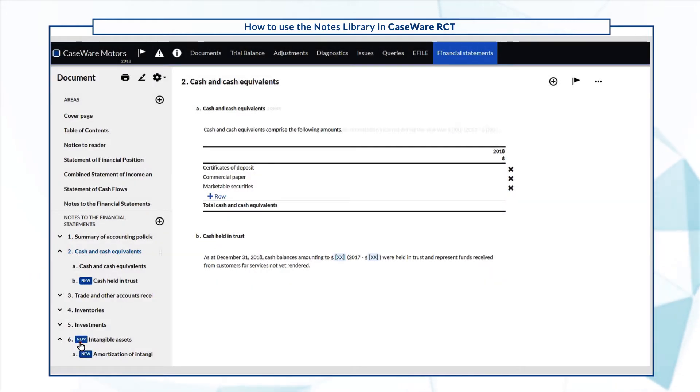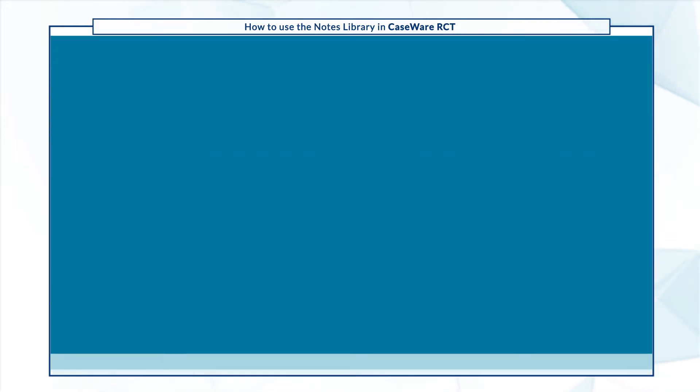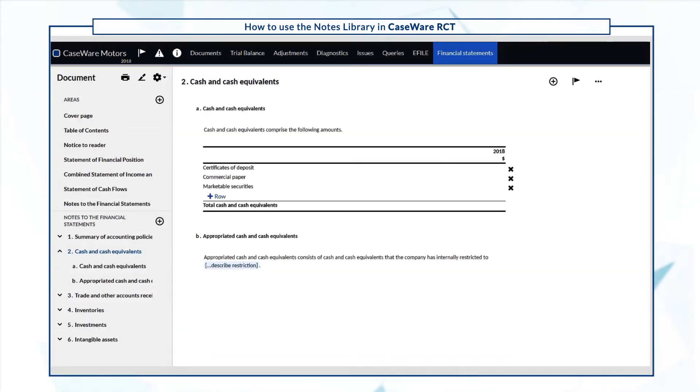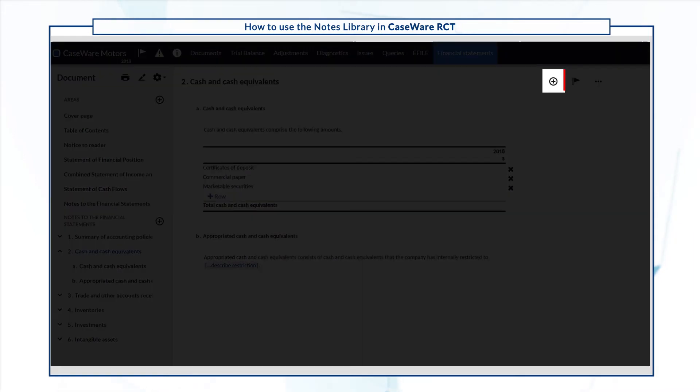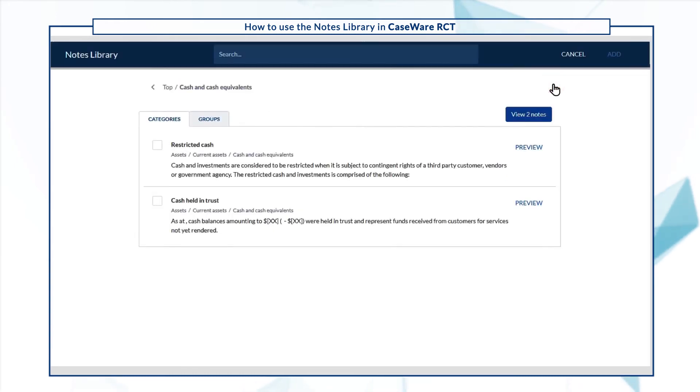After you select a newly added note to review or edit, the marker indicating a new note disappears. You can also use the library to add notes from a specific category using the Add button in the note area. Let's add a cash and cash equivalents note. Notice how the library now only shows notes within the cash and cash equivalents category.